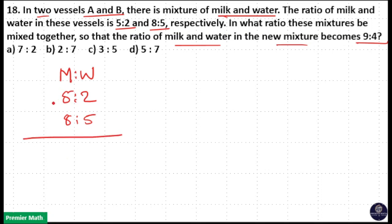In the final vessel, that is after mixing first vessel and second vessel, there will be a new mixture that contains milk and water in the ratio 9 is to 4. We need to find out in which ratio this vessel 1 and vessel 2 should mix to get the 9 is to 4 ratio in the final mixture.